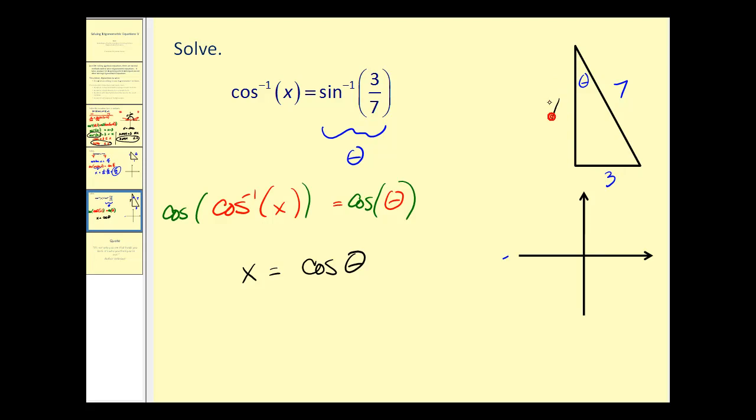Using the Pythagorean theorem we know that 7 squared must equal 3 squared plus we'll call it y squared. So we'd have 49 equals 9 plus y squared. Subtracting 9 on both sides, we'd have y squared equals 40.